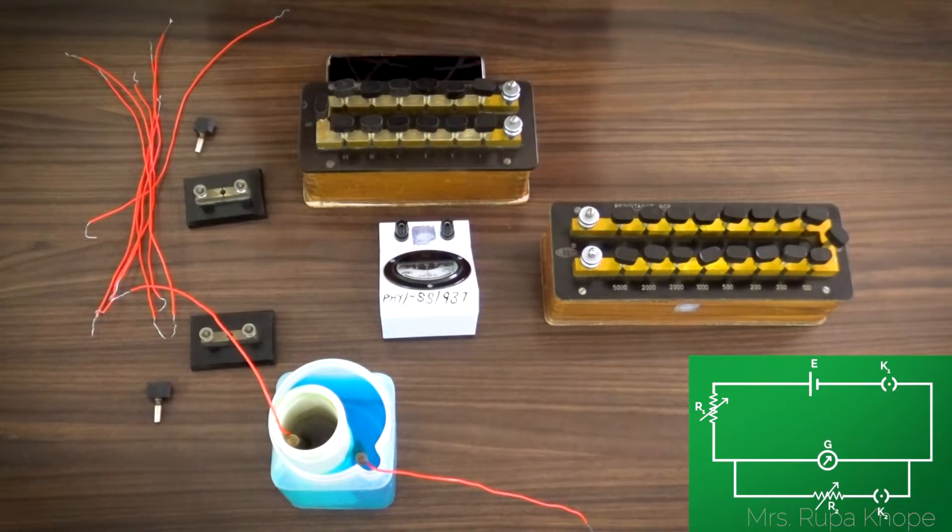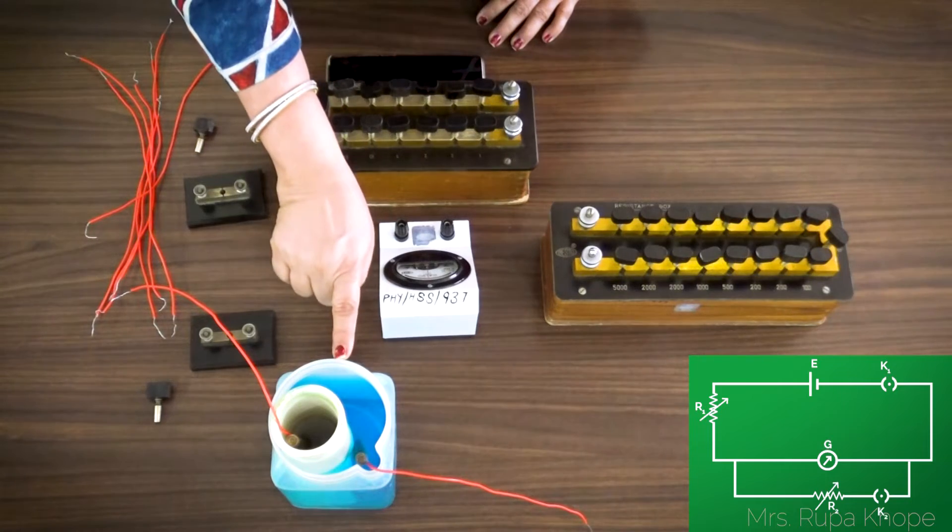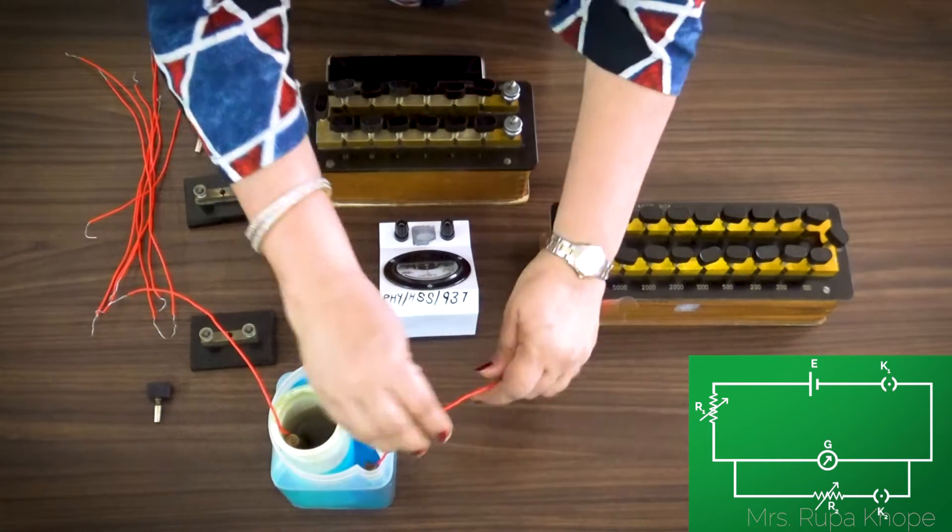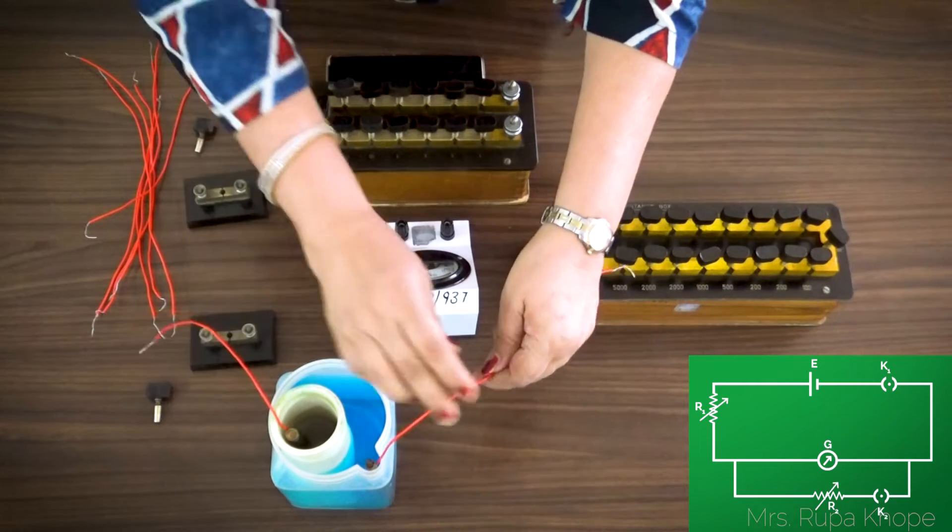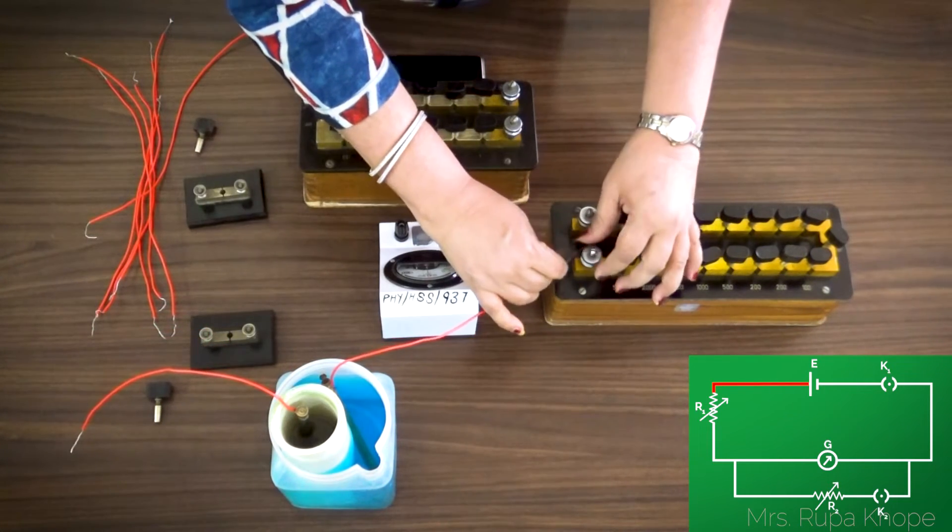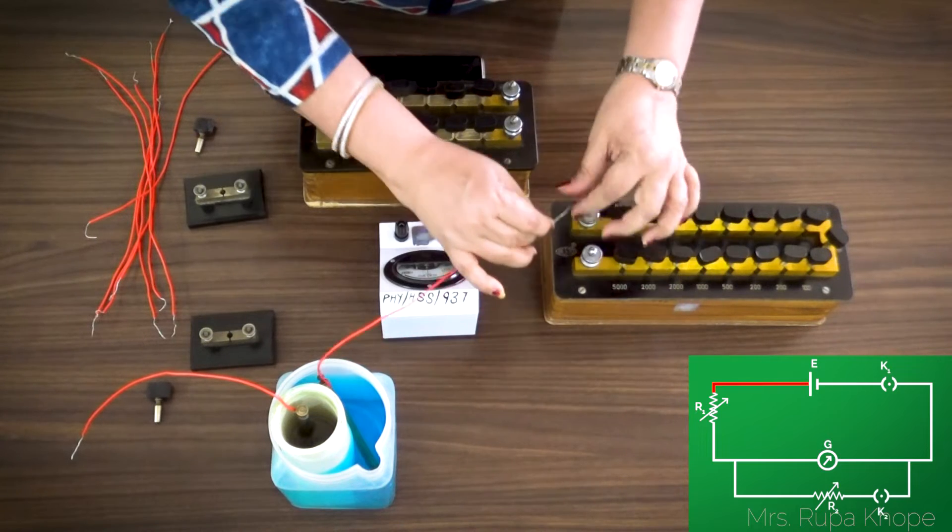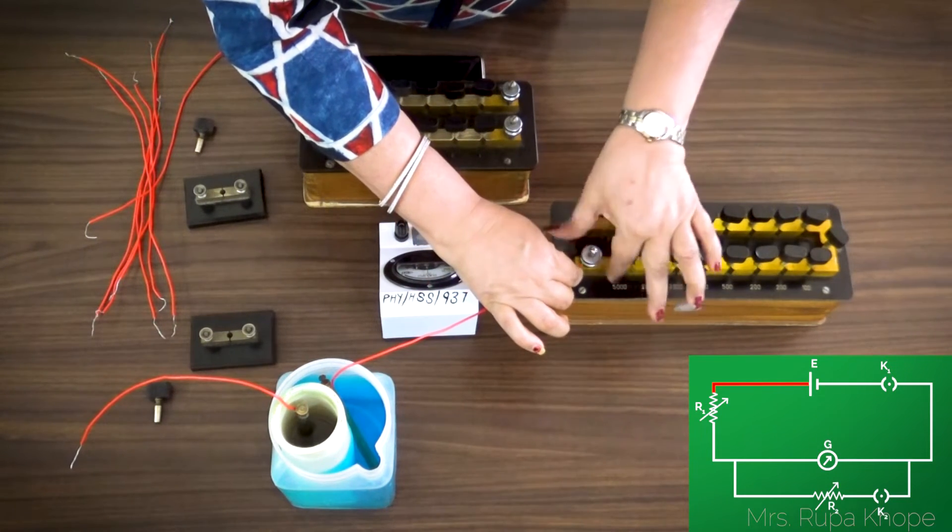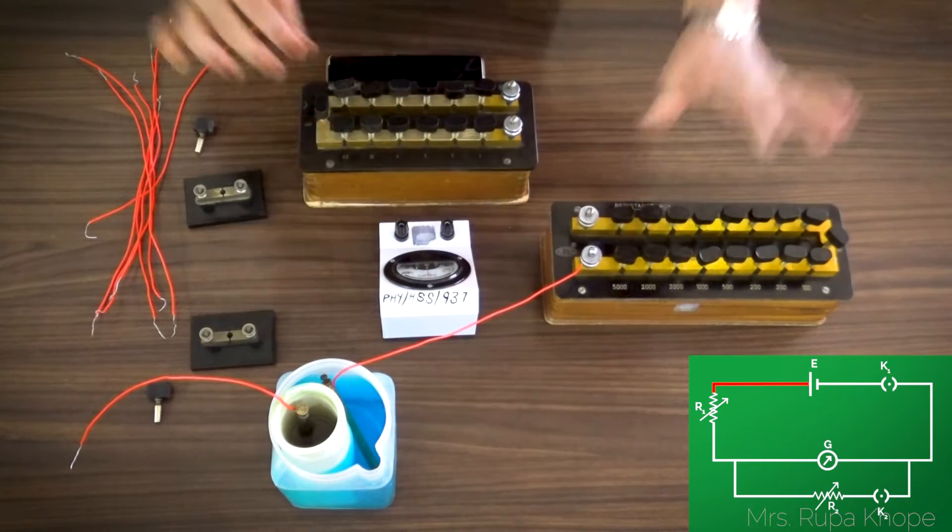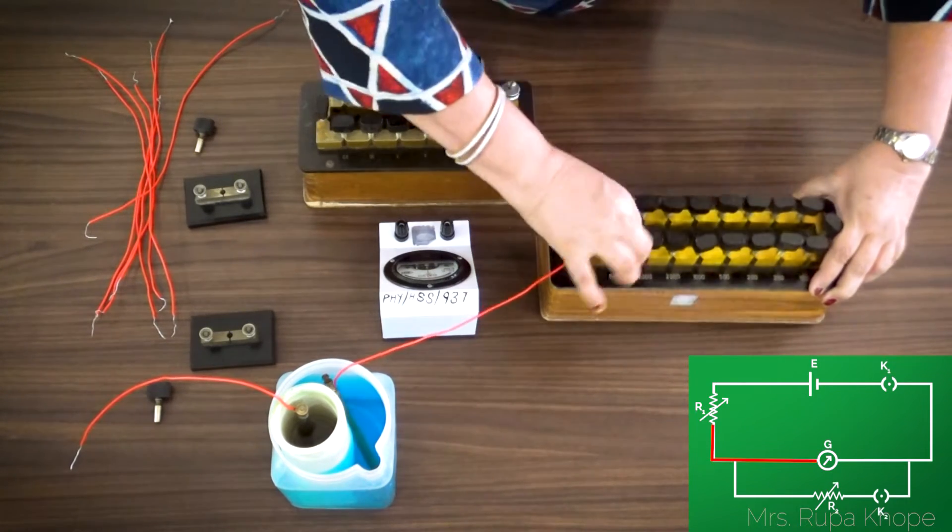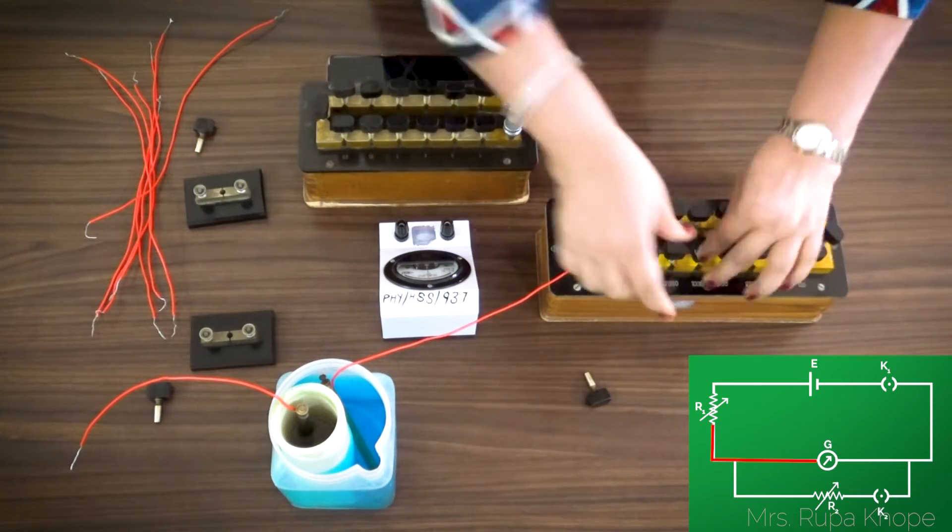Now we need to start with the experiment. Now let's start with the connections. Daniel cell, copper rod is positive, zinc rod is negative. So copper rod positive comes to resistance. You can see the resistance binding screws. So you have to just give one turn here and make the connections. Then first I will remove some 5000 and keep just till the beginning. I will tell you the reason why.